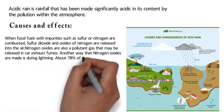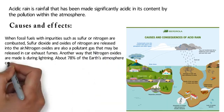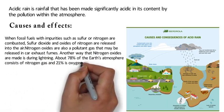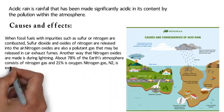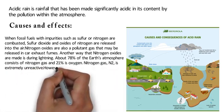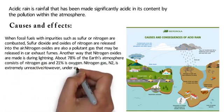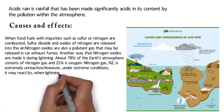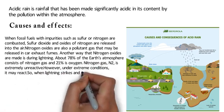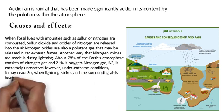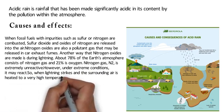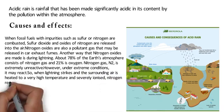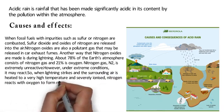About 78% of the earth's atmosphere consists of nitrogen gas and 21% is oxygen. Nitrogen gas, N2, is extremely unreactive. However, under extreme conditions it may react. When lightning strikes and the surrounding air is heated to a very high temperature and severely ionised, nitrogen reacts with oxygen to form nitrous oxides.